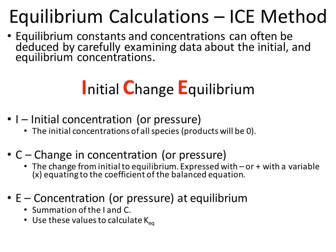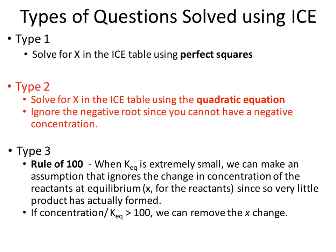We can use these ICE table values to figure out Keq, or in this case, we're given Keq and finding our actual concentrations. We looked at solving these questions using a perfect square, and if we can do that, that's the best way — it makes it a lot easier. But most of the time we'll be dealing with equations that don't give us perfect squares, and therefore we'll be left with a quadratic equation. We'll have to get into that format, solve it, and then figure out which value of x to use.